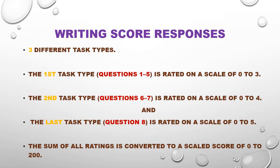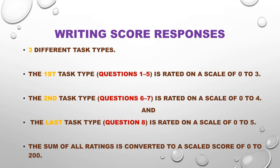Writing score responses: The writing test responses are sent to the ETS Online Scoring Network and scored by certified ETS raters. The writing test includes 3 different task types. The first task type, questions 1 to 5, is rated on a scale of 0 to 3. The second task type, questions 6 to 7, is rated on a scale of 0 to 4.